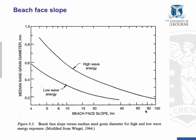The beach profile gradient varies with wave energy. With low wave energy we have a lower slope than with higher wave energy for a given sand grain diameter. We also see that as sand grain diameter increases, the slope decreases — so there is an inverse relationship between the slope of the beach face and the grain size of sand on the beach.